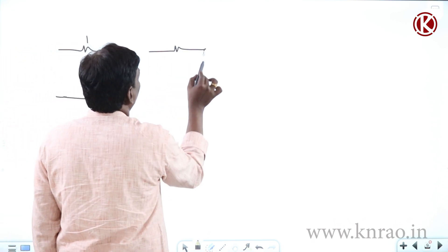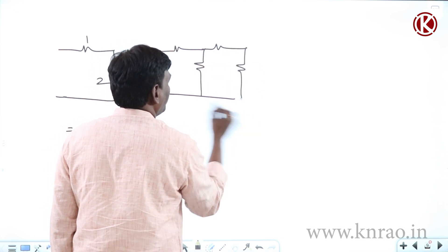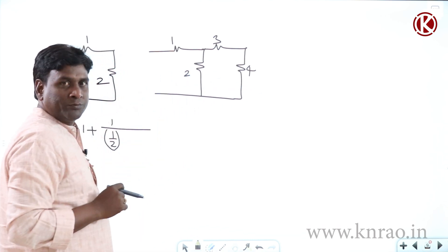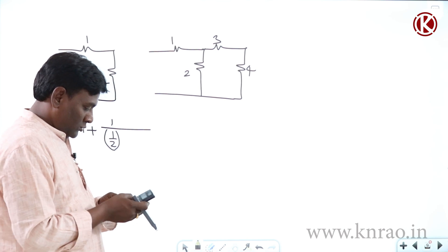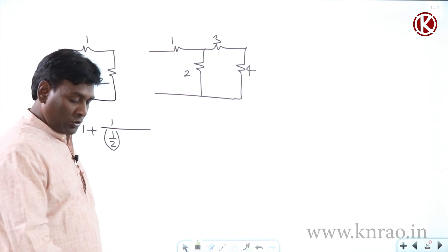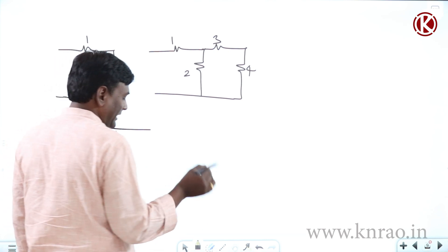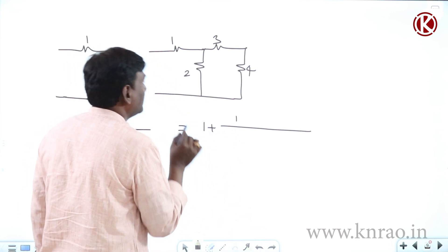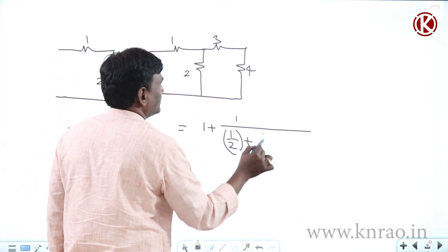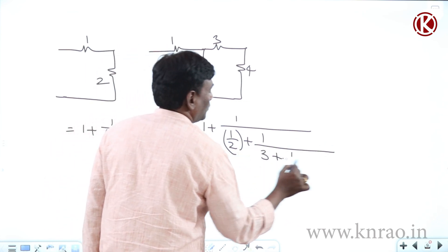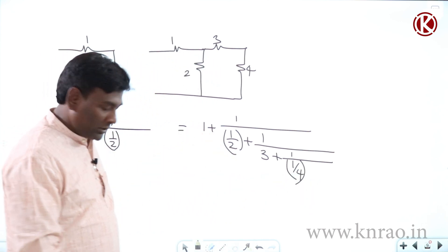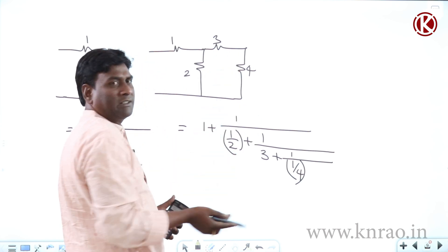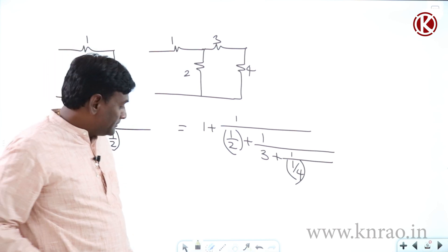Now let me extend this to 4 resistors: 1, 2, 3, 4 ohms — R1, R2, R3, R4. If you try to solve: 3 plus 4 is 7; 7 in parallel with 2 gives 1.55; 1.55 plus 1 is 2.55 ohms. We can rewrite this as R_eq = 1 + 1 over (1/2 + 1/3 + 1/(1/4)), where 1/(1/4) = 4, so 3+4=7, and 7 in parallel with 2 plus 1 gives 2.55 ohms.